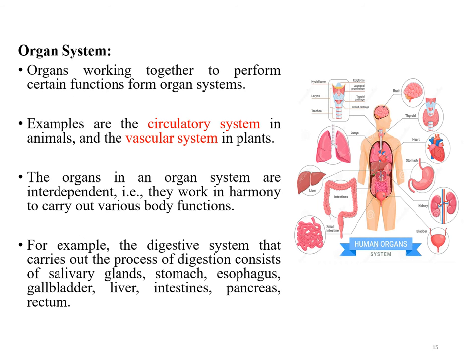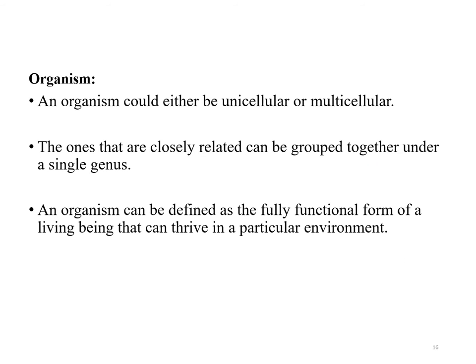An organ system is a group of organs that work together to perform certain functions in an organism's body — for example, the circulatory system in animals and the vascular system in plants. The organs in an organ system are interdependent, working in harmony to carry out various body functions. For example, the digestive system, which carries out digestion, consists of salivary glands, stomach, esophagus, gallbladder, liver, intestines, pancreas, and rectum. All the organ systems functioning cooperatively make up an individual living thing, or organism.